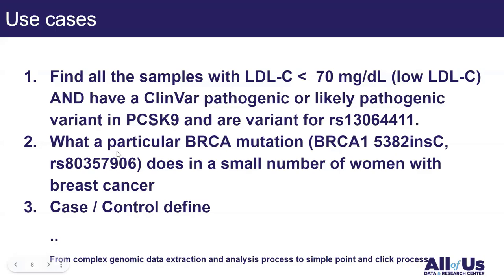Previously, you would need to extract genomic data for all participants, then for females with breast cancer, check their genotype at that position to determine if they are heterozygous, homozygous reference, or homozygous alternative, and then conduct analysis. The third use case is more general: defining cases and controls. For example, people who have a variant in the PCSK9 gene are cases, and you can define that directly in the cohort and dataset builder without going into the details of genotypes.